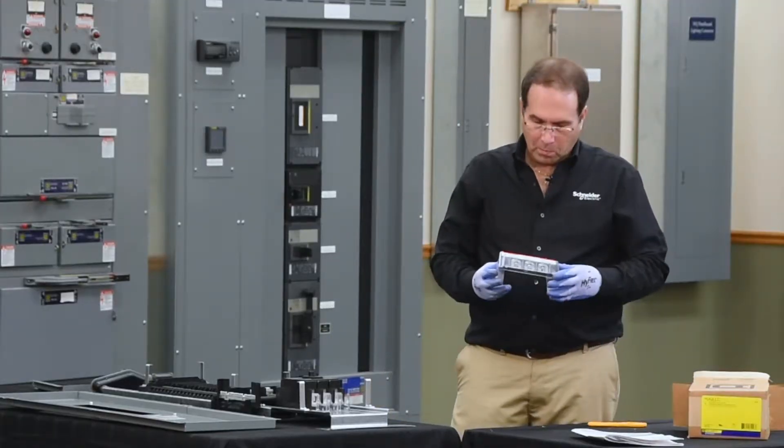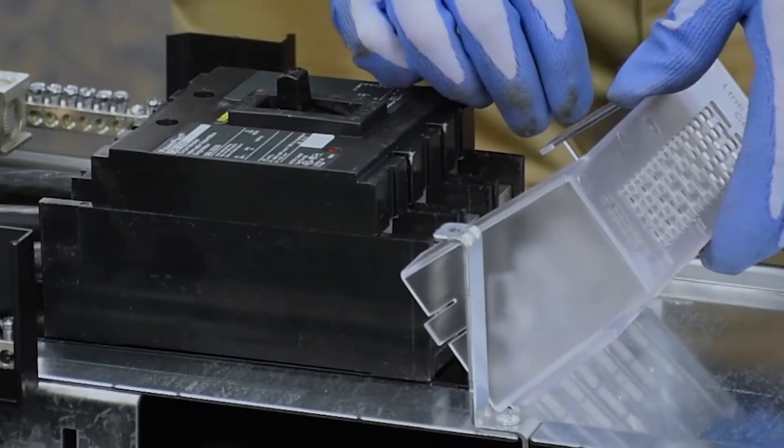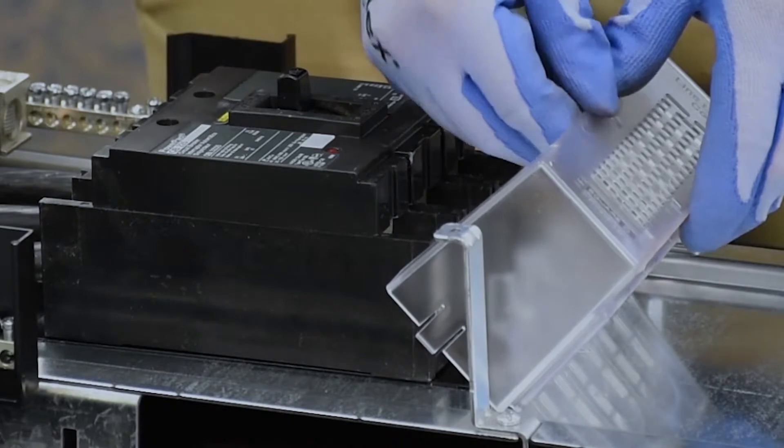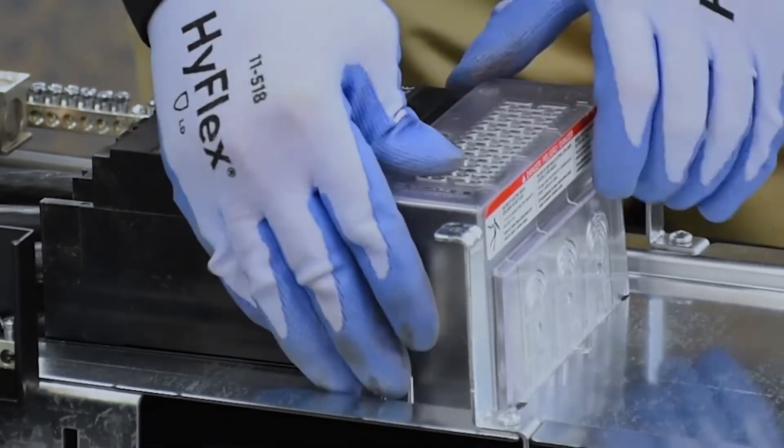Next, take the larger barrier, insert the two tabs that are closest to the end of the mounting pan into the pan first, rotate it down into position, and snap it into place.